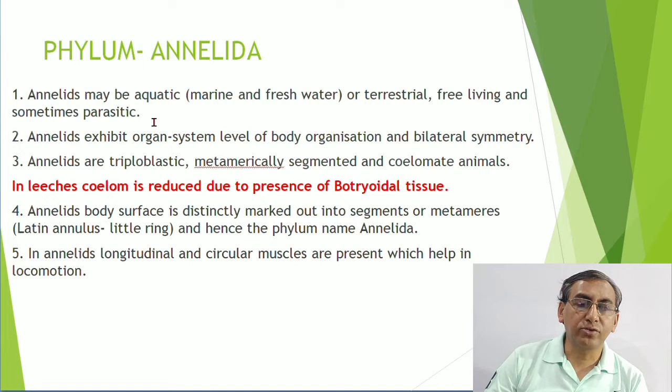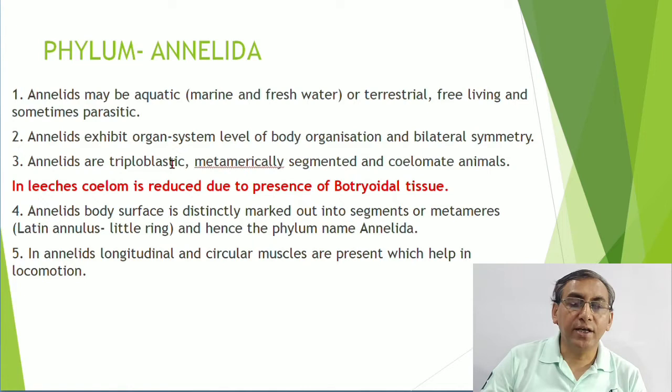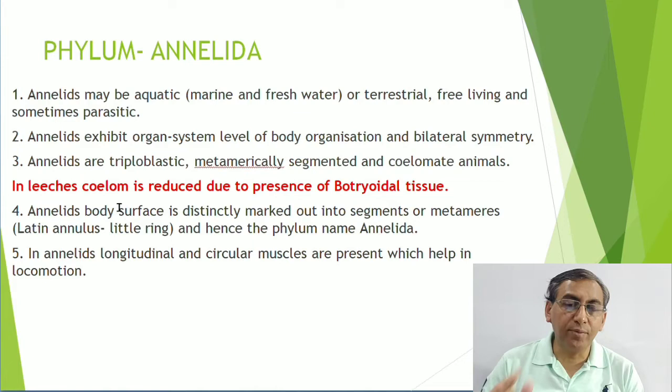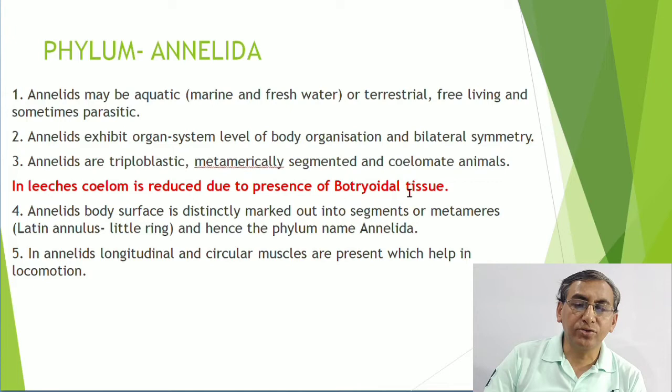Annelids exhibit organ system level of body organization. They have bilateral symmetry, are triploblastic, and show metameric segmentation - body is divided into segments externally by rings and internally by septa. They are eucoelomate. In leech, a specific tissue is present in the coelom known as botryoidal tissue, which is a type of connective tissue related to excretion. The body is divided into segments, hence the name Annelida.